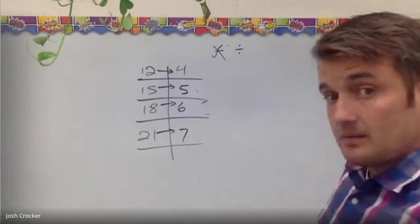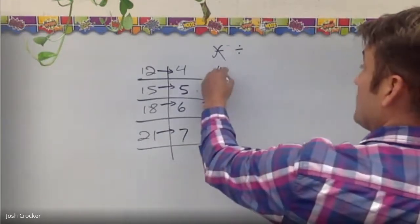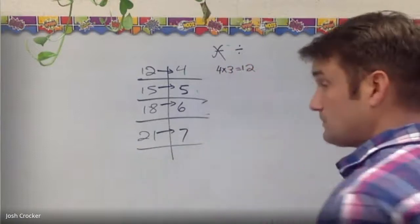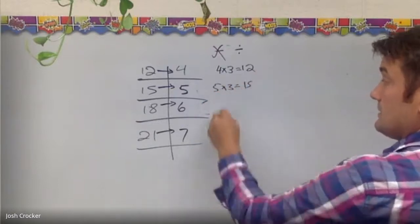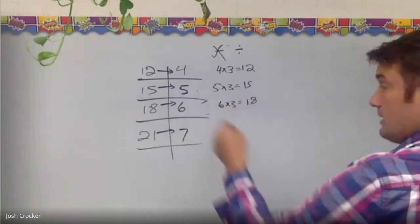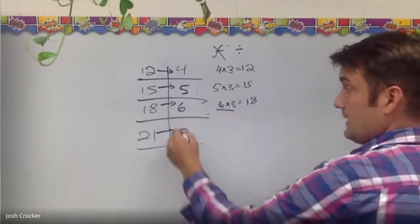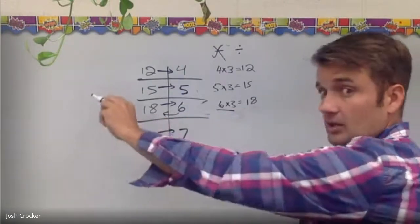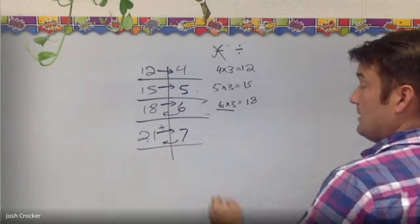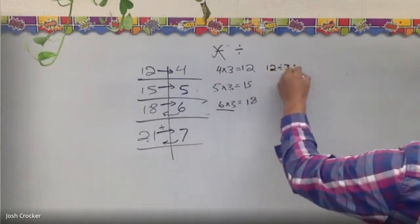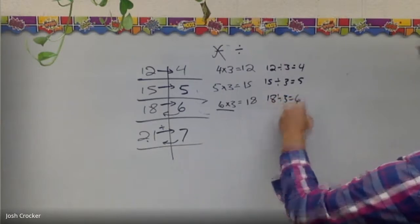So I can ask myself here 4 times something will make 12 and that might be easier. So like I might know I might know that 4 times 3 is 12. And then I can see if that continues to work. 5 times 3 is 15. 6 times 3 is 18. So this is working. This is continuing to get me to the other number. But when I say times that's like going this way, right? So if it's multiplication going this way, 7 times 3 is 21. Then coming back this way it will be division. So 4 times 3 is 12. 12 divided by 3 is 4. 15 divided by 3 is 5. 18 divided by 3 is 6.